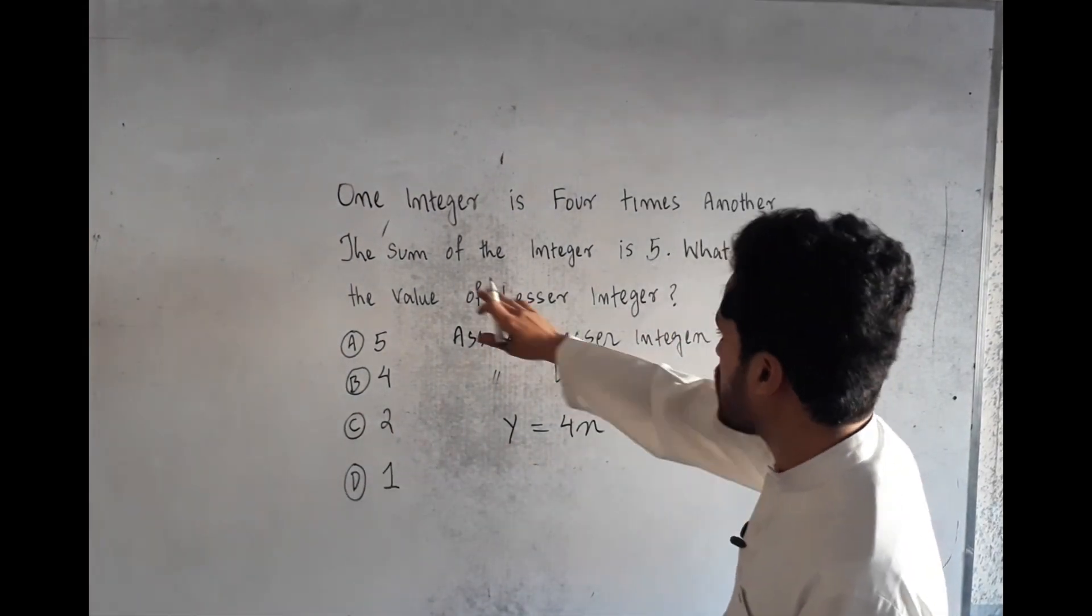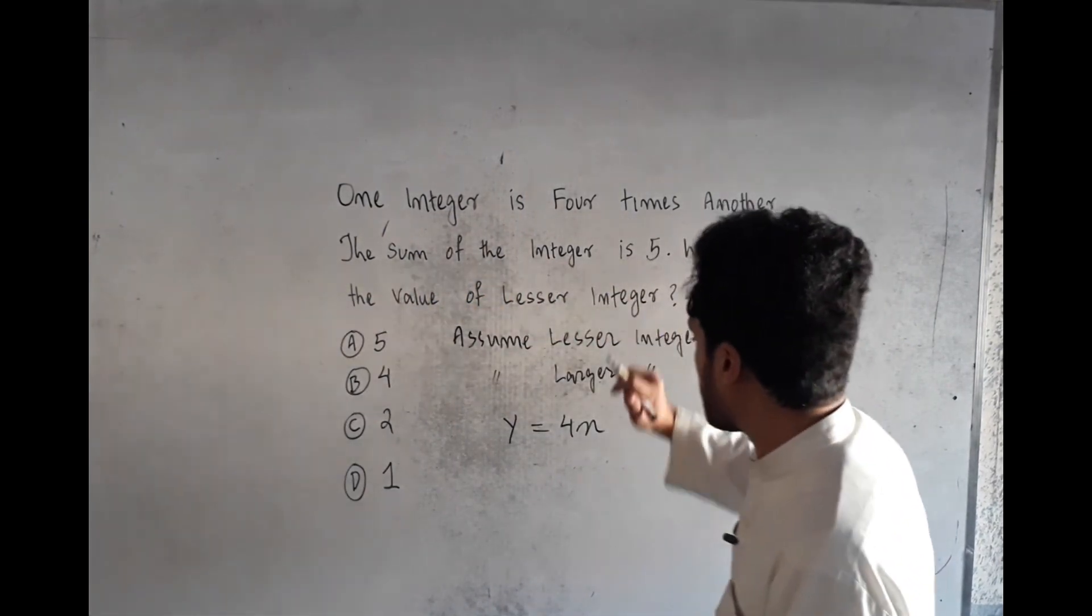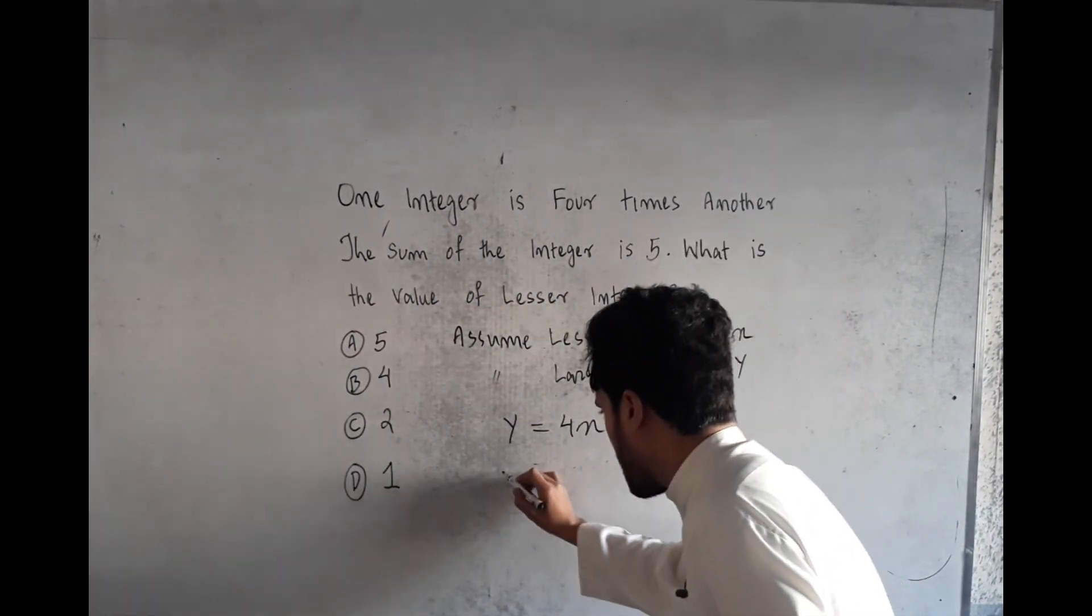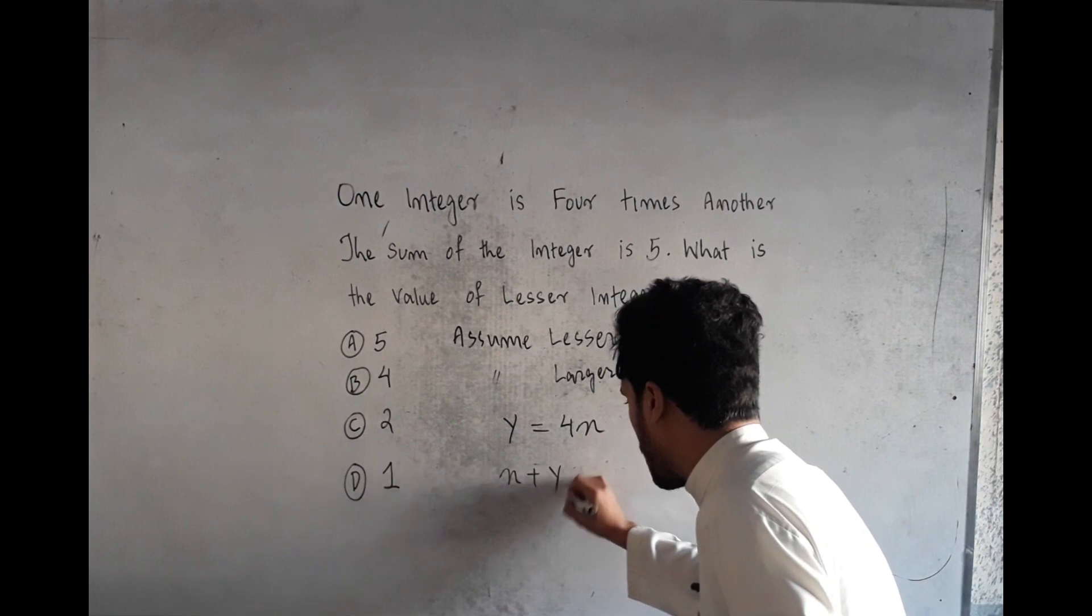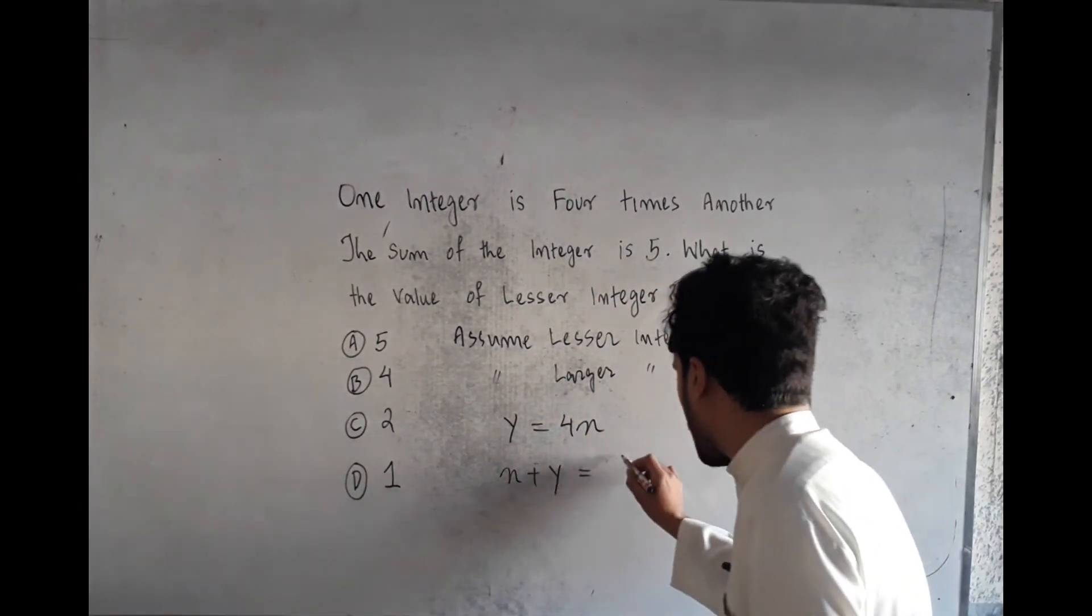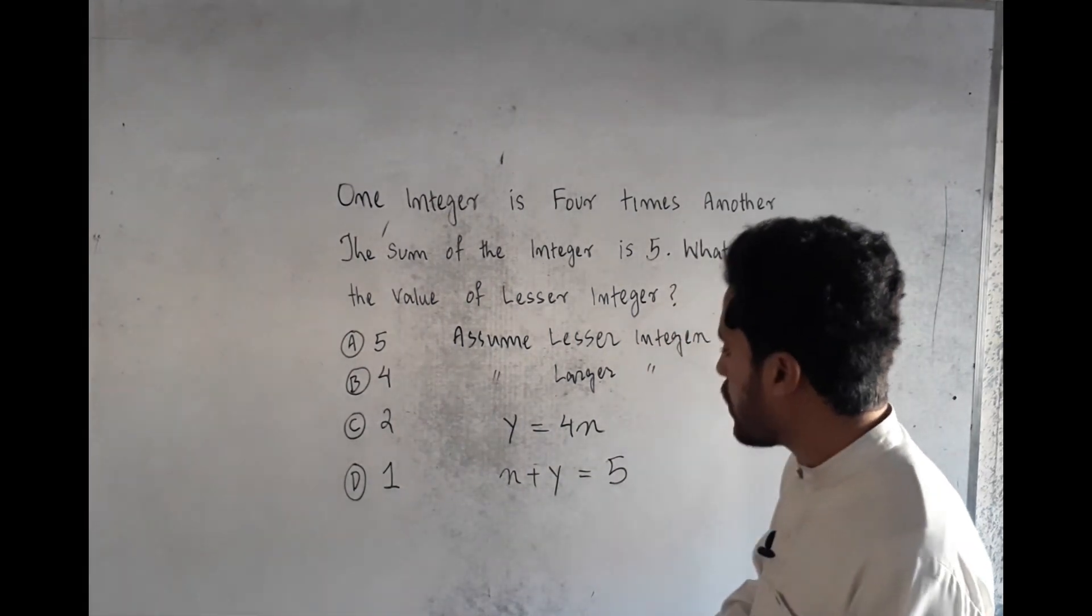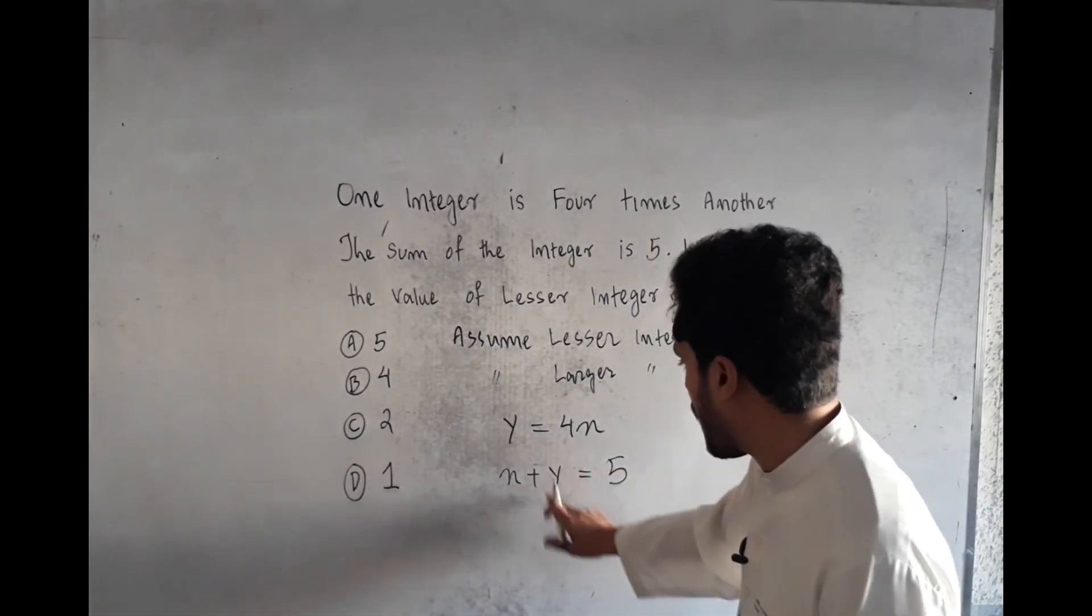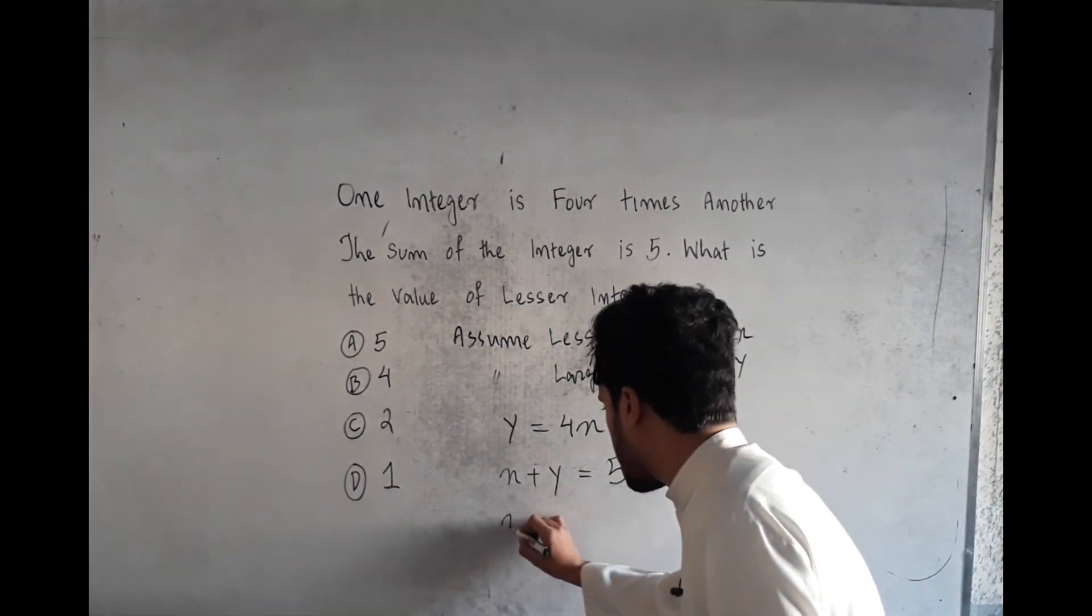The second condition is the sum of the integers is 5. Here x plus y equals 5. Now you have to put the value of y into the second equation: x plus...